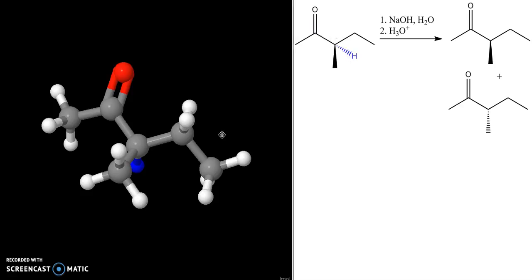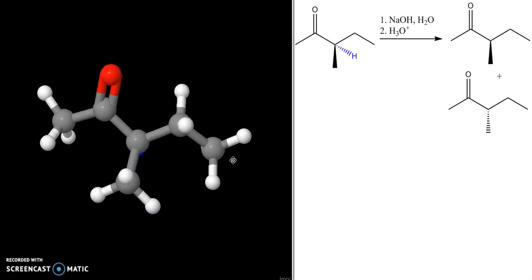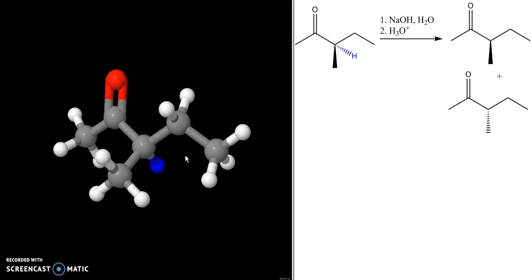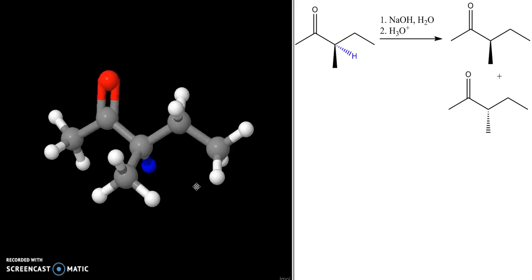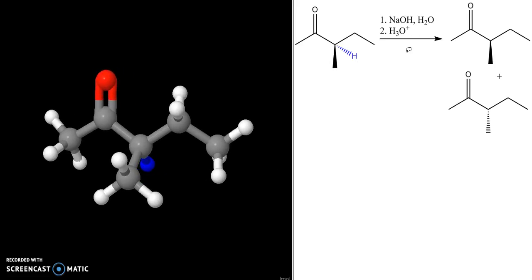I've shown the R isomer of my carbonyl compound here, and I also have a 3D model of it. There's my carbonyl, the methyl group—this is the hydrogen we're removing. I've coded it blue so we can keep track of it.